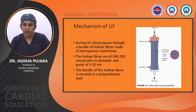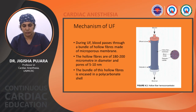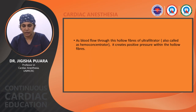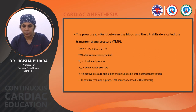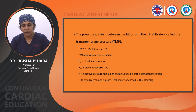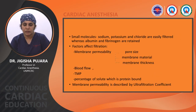Mechanism of ultrafiltration: blood passes through a bundle of hollow fibers made of microporous membrane, 180 to 200 micrometers in diameter with pore size of 5 to 10 nanometers. The bundle is encased in a polycarbonate cell. Blood flow through the hollow fibers of the ultrafiltrator — also called the hemoconcentrator — creates a positive pressure within the fibers. The transmembrane pressure (TMP) equals blood inlet pressure plus blood outlet pressure divided by 2, plus the negative pressure on the effluent side. To avoid membrane rupture, TMP must not exceed 500 to 600 mmHg. Small molecules like sodium and potassium chloride are easily filtered, whereas albumin and fibrinogen are retained.